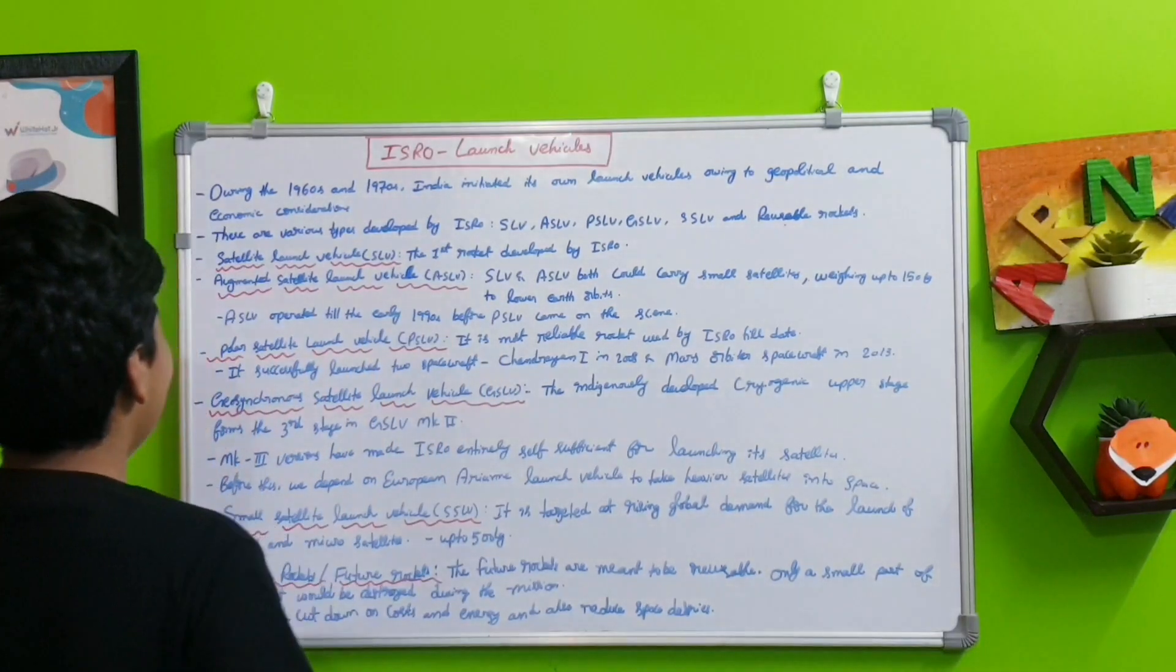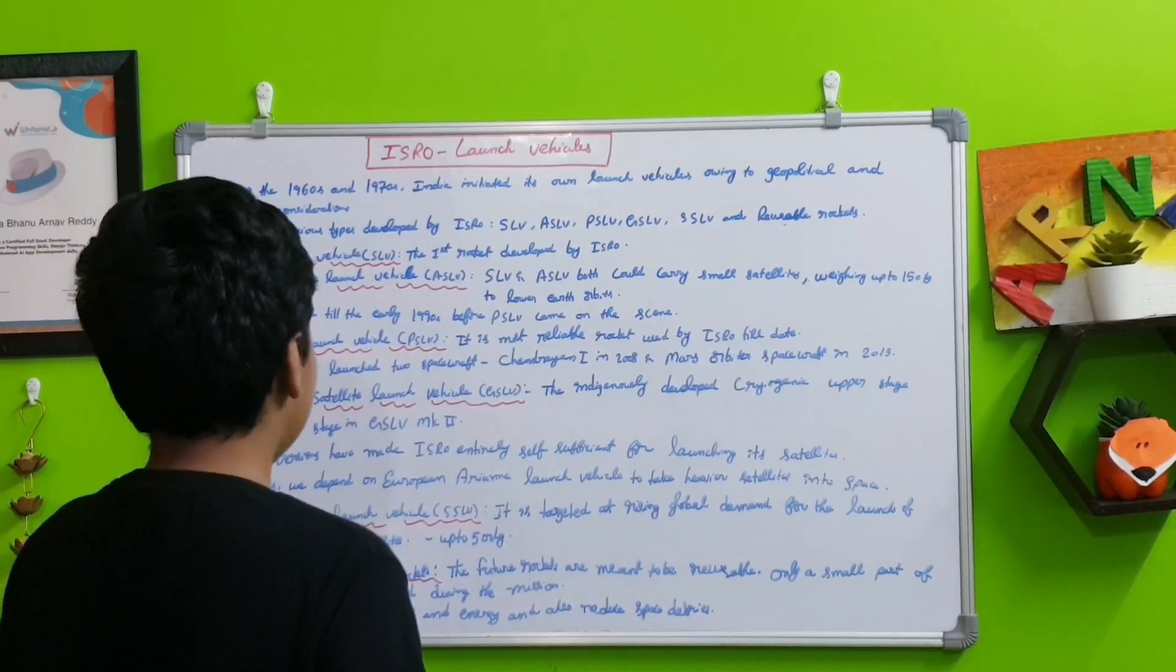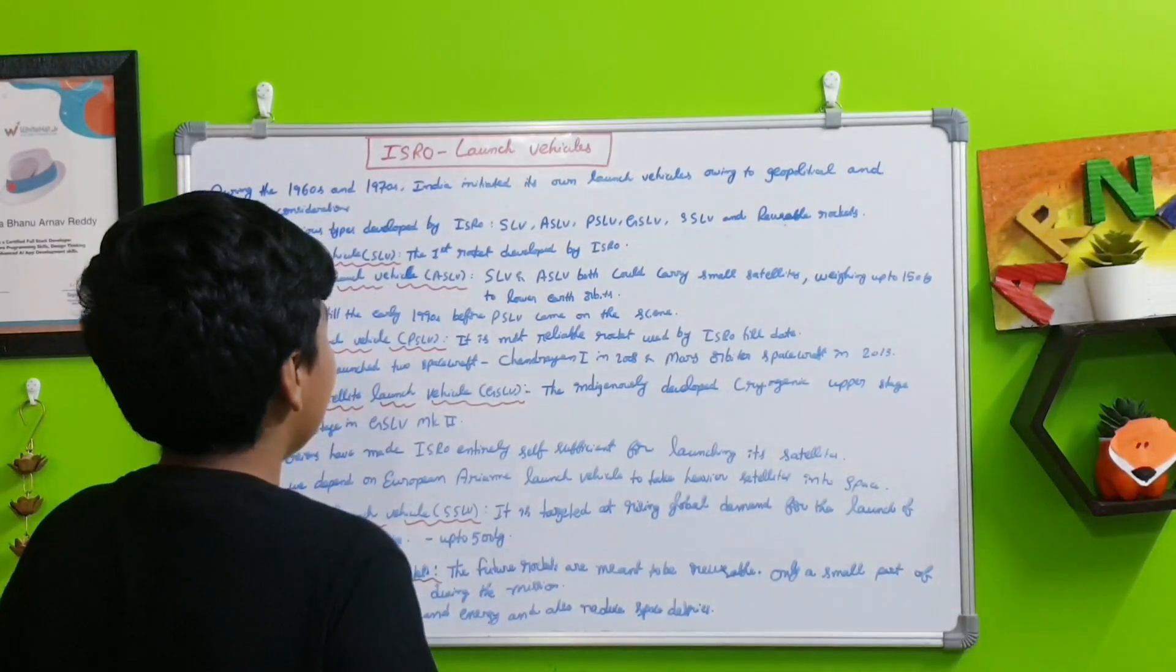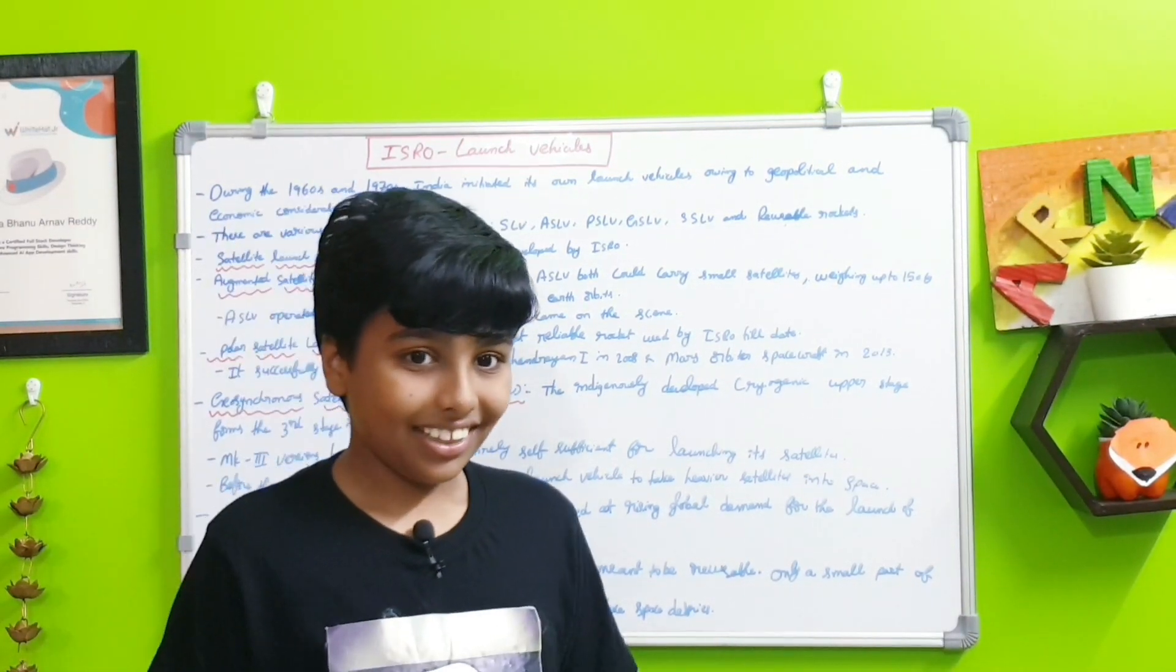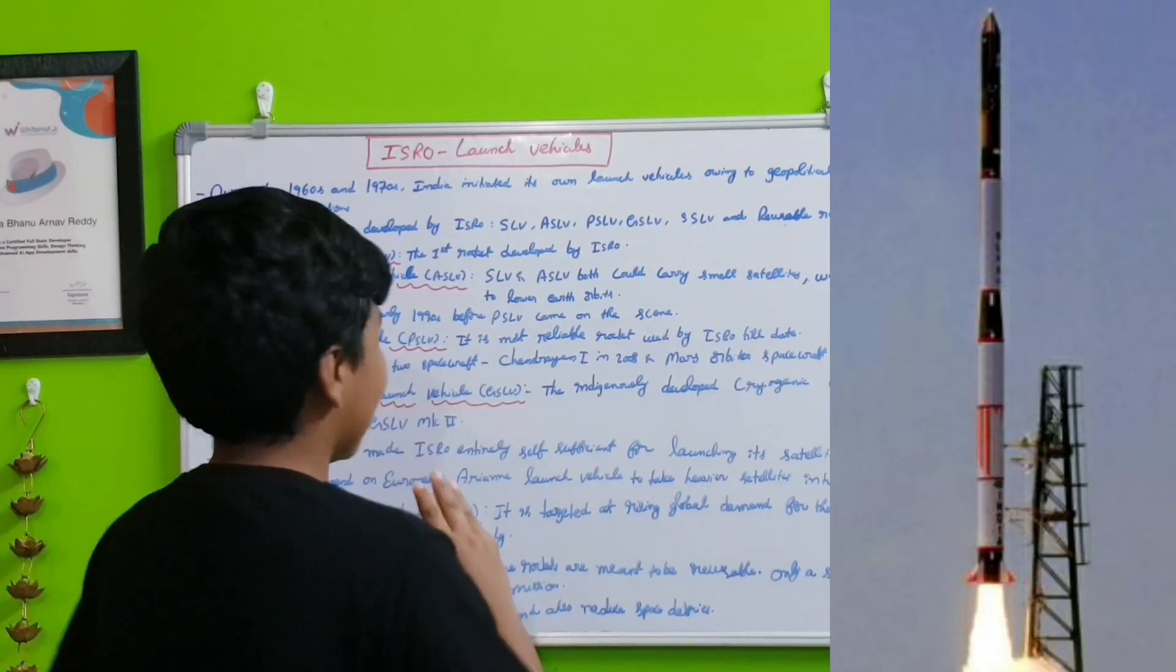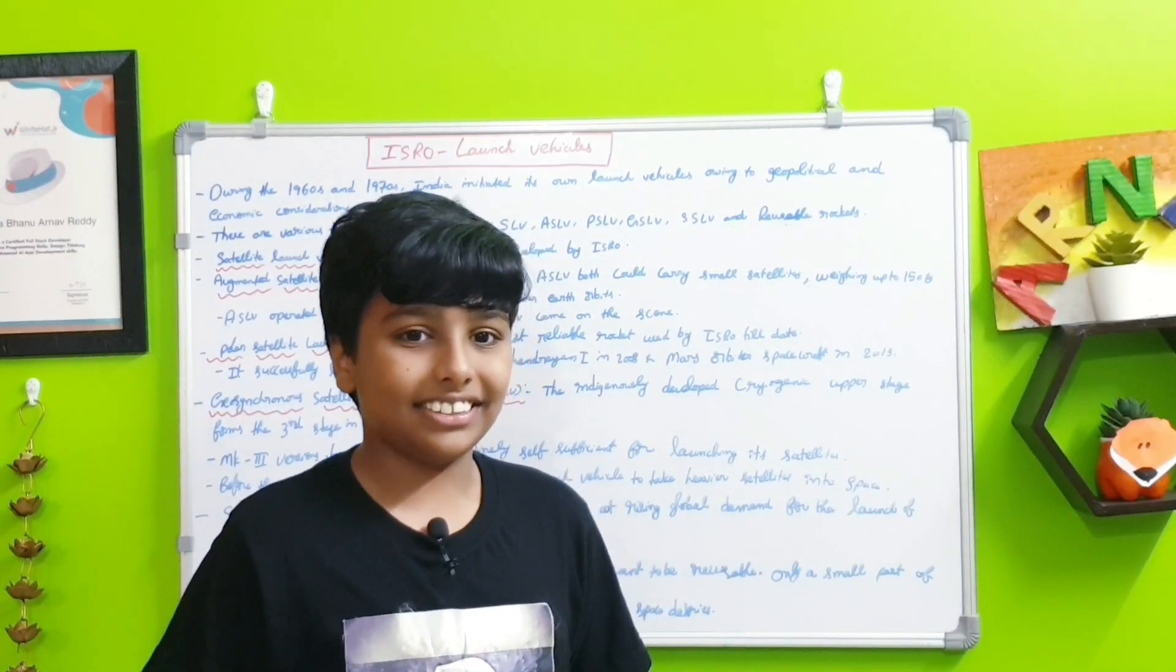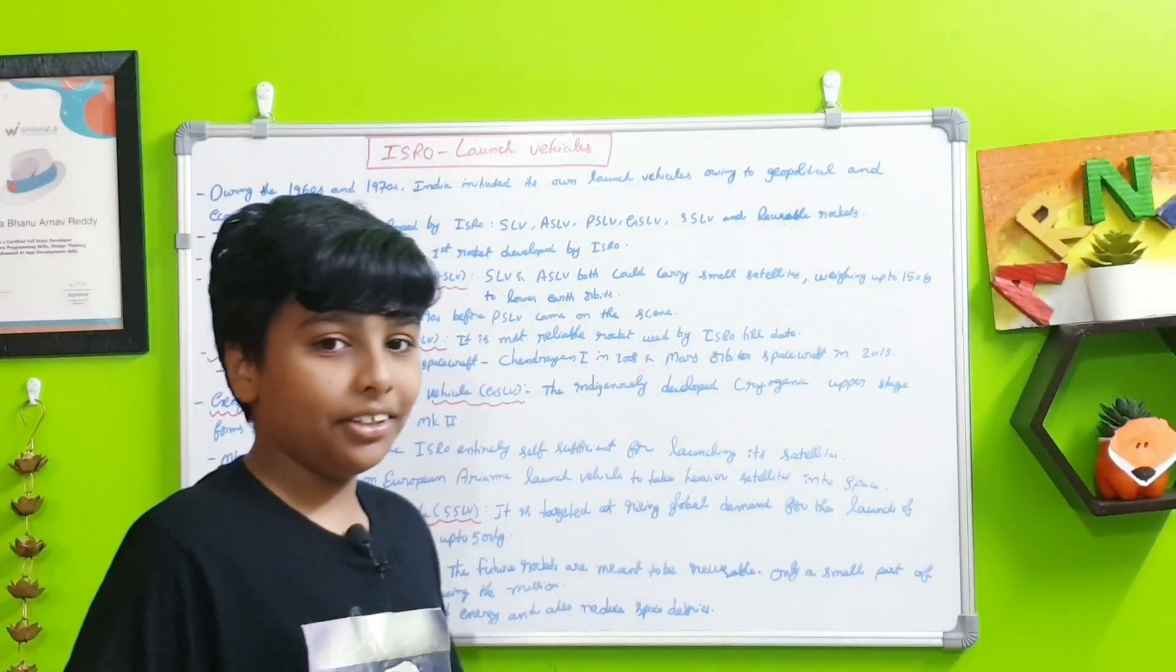First, the SLV or Satellite Launch Vehicle. This was the first rocket developed by ISRO. It successfully launched in its third attempt. Its first two attempts failed.